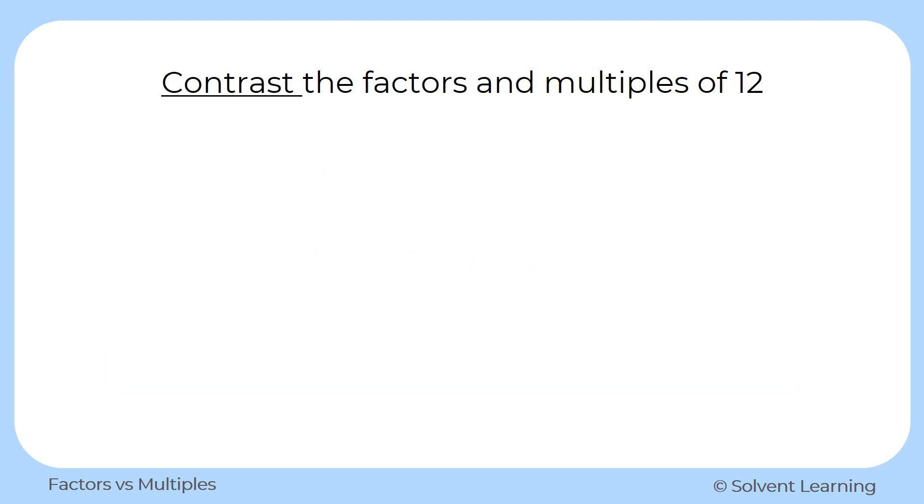Now let's contrast the factors and multiples of 12. So we list out those factors and multiples, the same list that we had before. But when we're contrasting things, we want to see what their differences are. So we already saw that both lists have the number 12 in common. So let's see what's different about them.